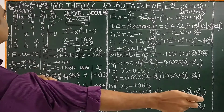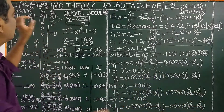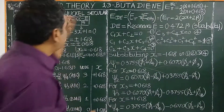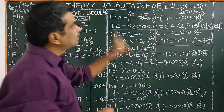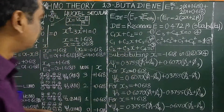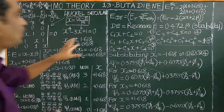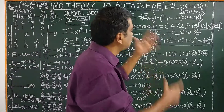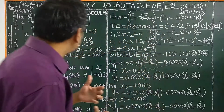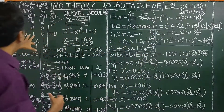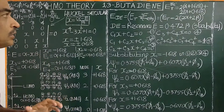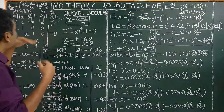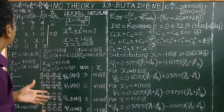Good morning. Today we will see the Hückel molecular orbital theory, its application to 1,3-butadiene. We will calculate the resonance energy, the delocalization energy, and also the Hückel secular determinant equation — how the Hückel secular equation is derived.